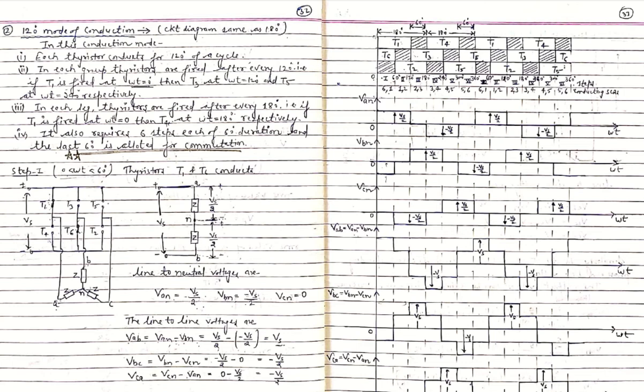This is the timing sequence diagram. In each interval of 60 degrees, two thyristors are conducting, whereas in 180-degree mode of conduction, three thyristors conduct in each 60-degree step. We will now understand the 0-to-60-degree interval by analyzing the conduction of the devices.